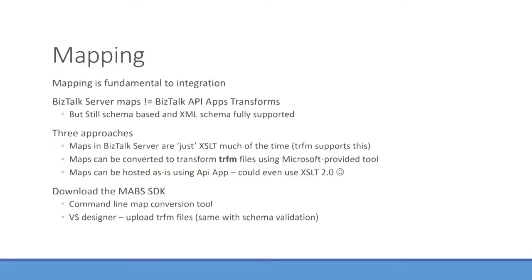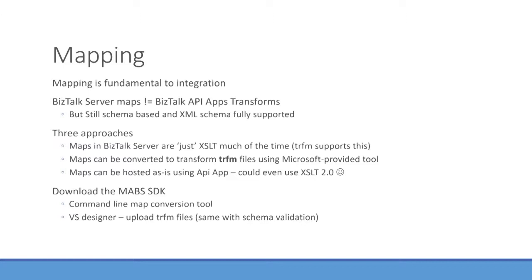I'm going to go through these one by one, starting with the easy stuff. Mapping — it's clear that in BizTalk Services v1, as there is in Logic Apps, there's a mapping transformation solution, now a transformation API app. It's based on the TRFM files, the transform files you created in maps v1, which means you can just take those if you've already created them and upload them to run as an API app. But there are other approaches if you have existing BizTalk Server assets you want to reuse without starting from scratch. A lot of people invest a lot of time in creating complex maps, and rebuilding from BTM files in BizTalk Server to TRFM files in Logic Apps could be a lot of work.